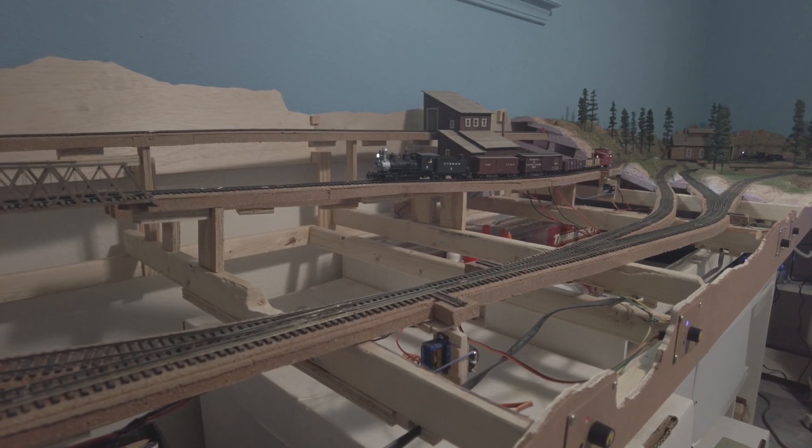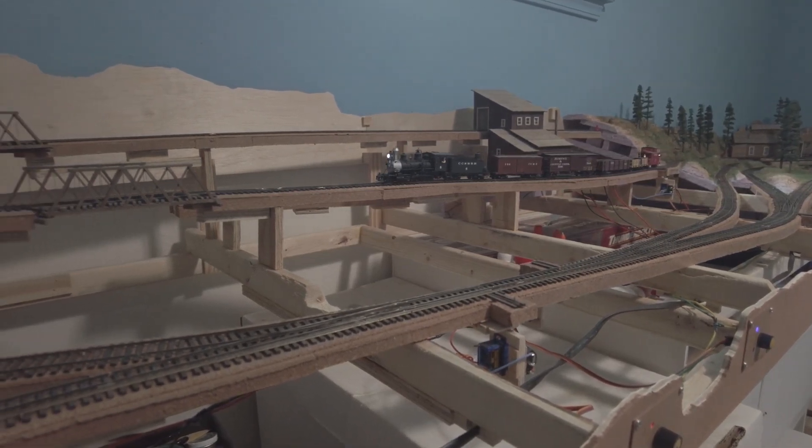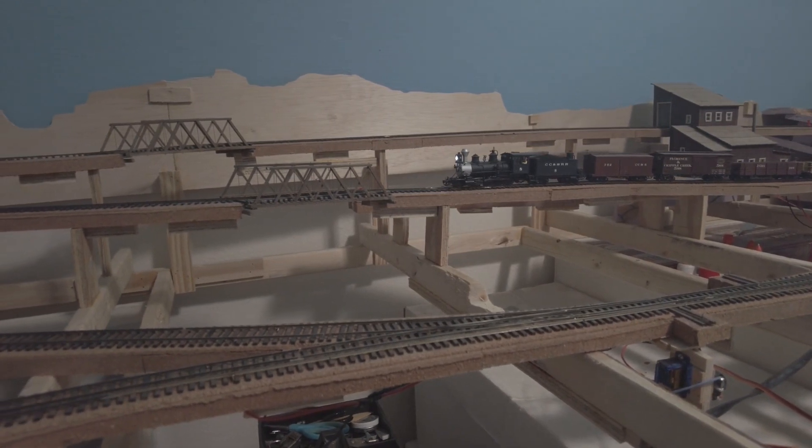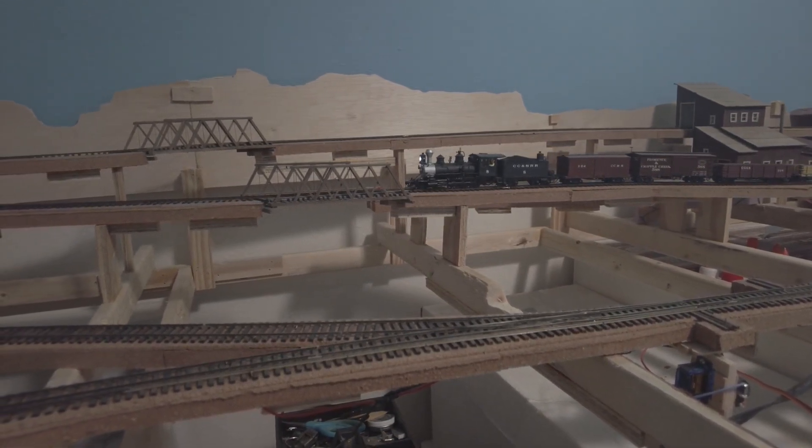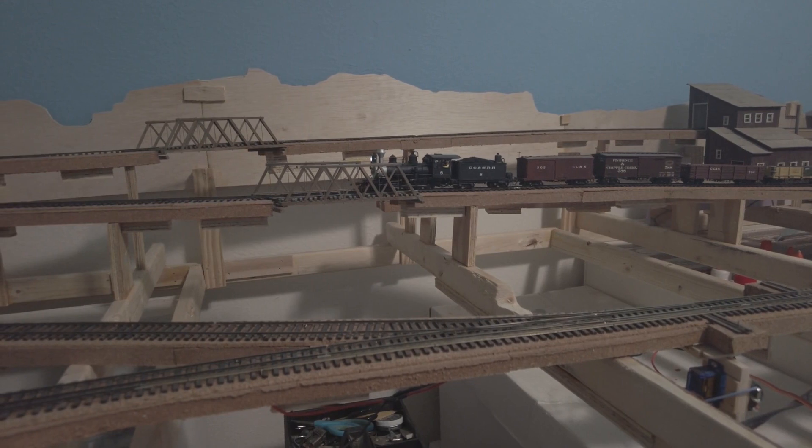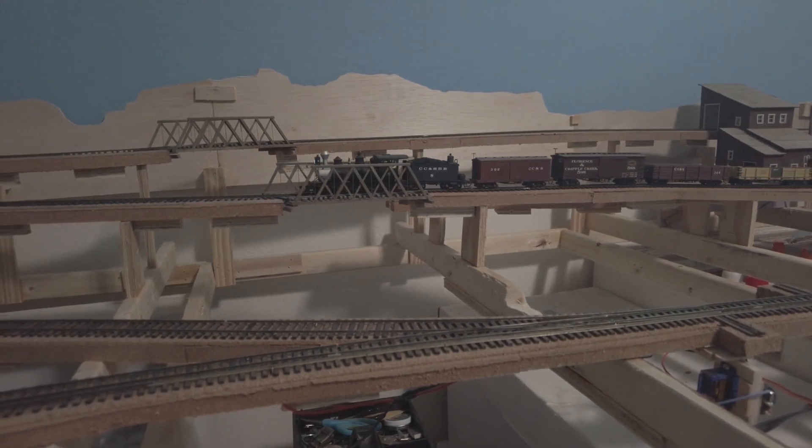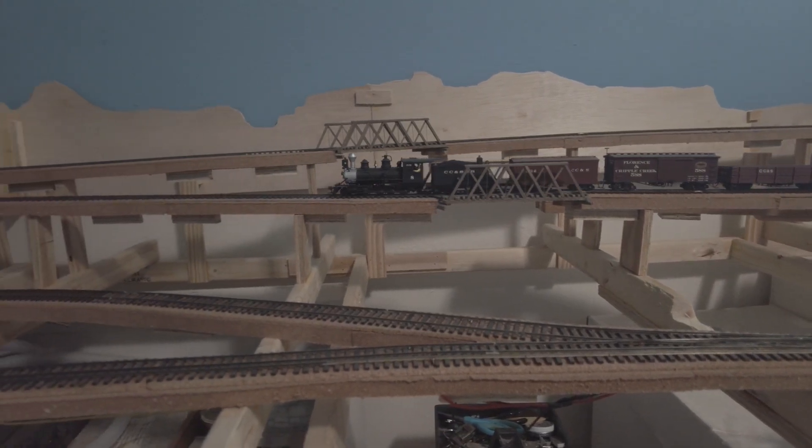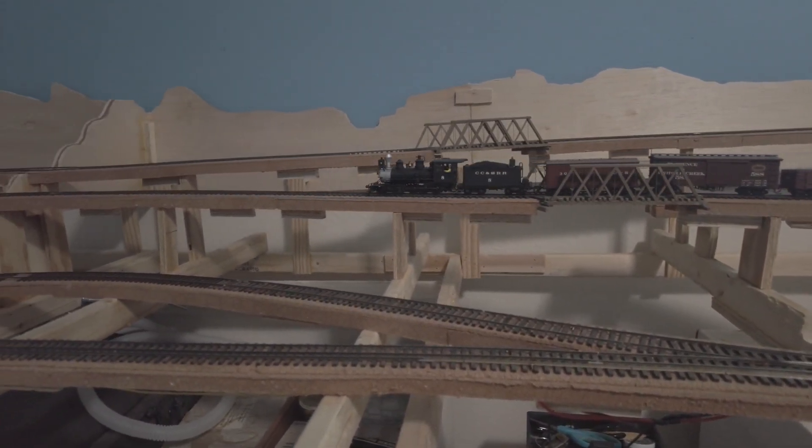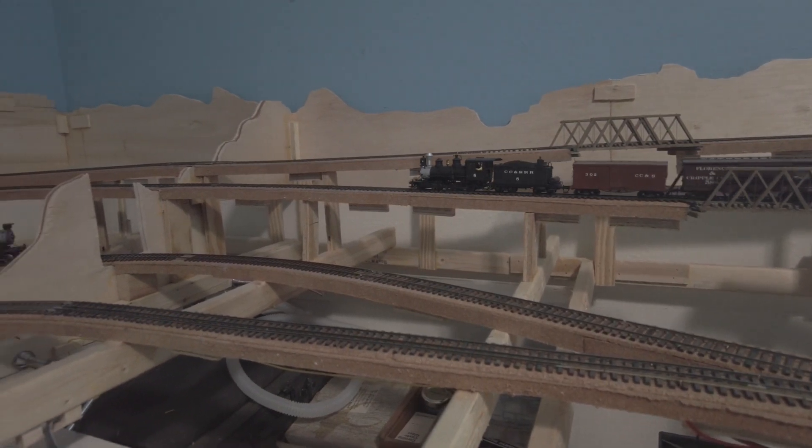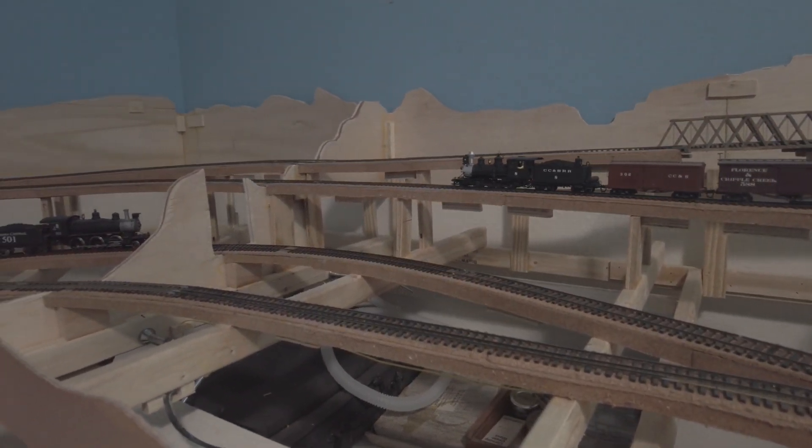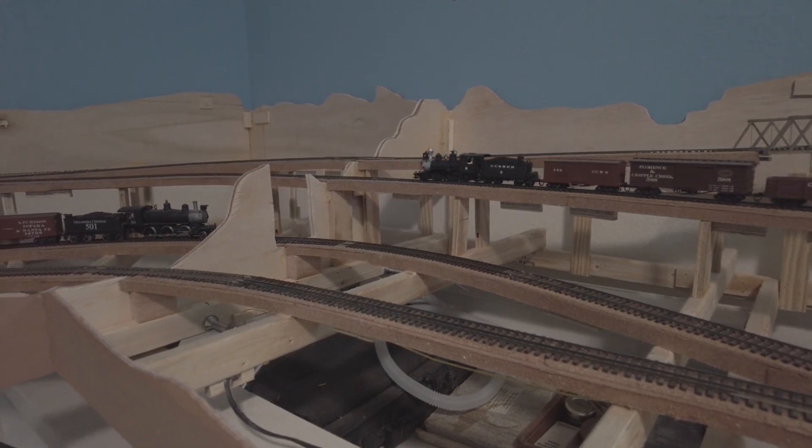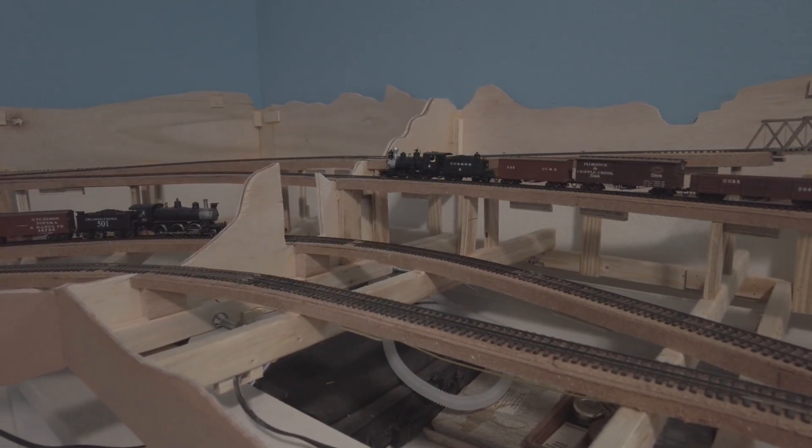Continuing up the 2% grade, we cross over Catskill Creek. The town side of Catskill will be here in the foreground in front of the dual gauge.